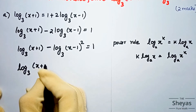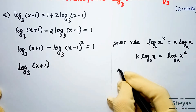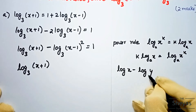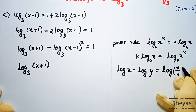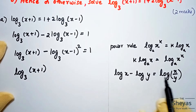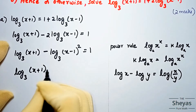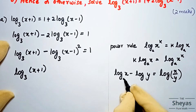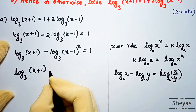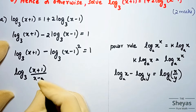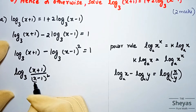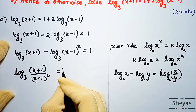Now, recall the second law of logarithms: log x - log y = log(x/y). Applying this, log base 3 of (x+1) minus log base 3 of (x-1)² can be written as log base 3 of [(x+1) / (x-1)²] = 1.